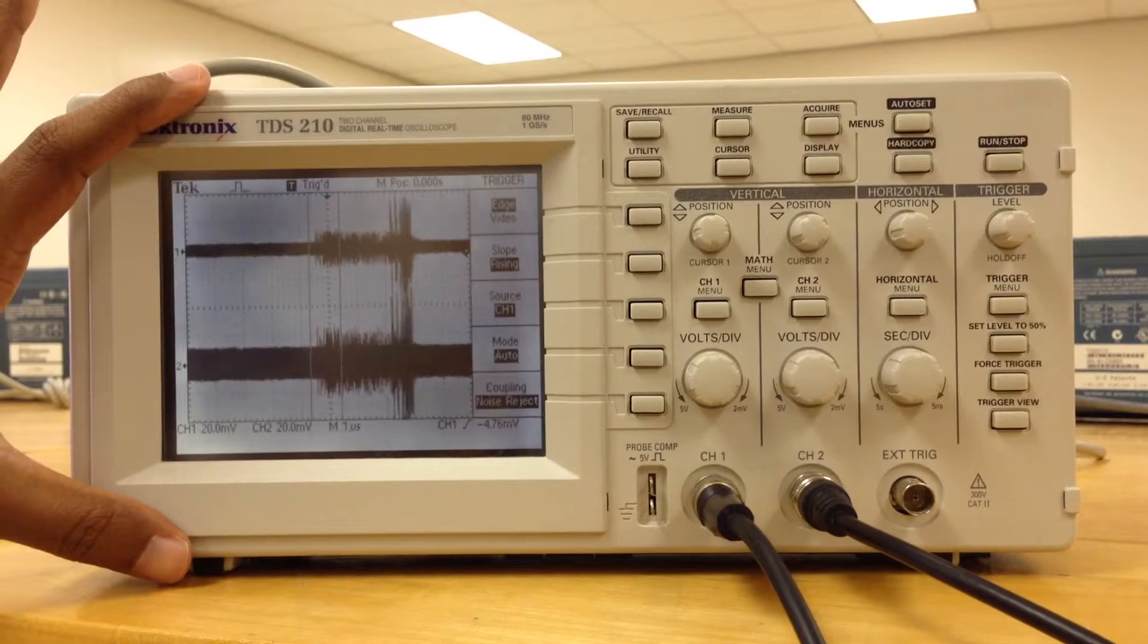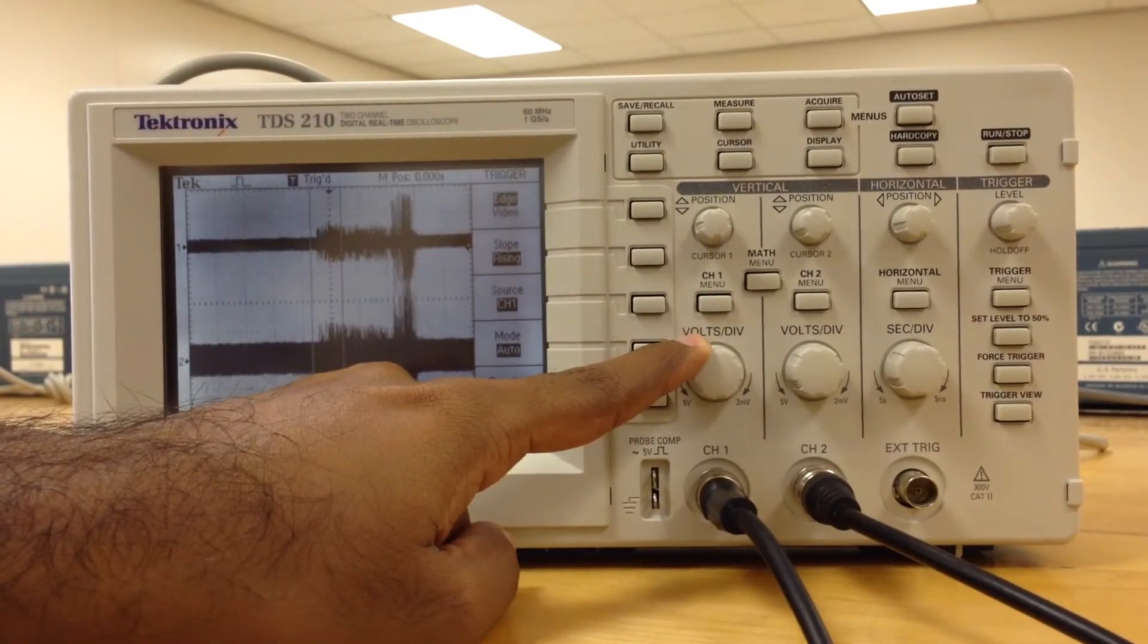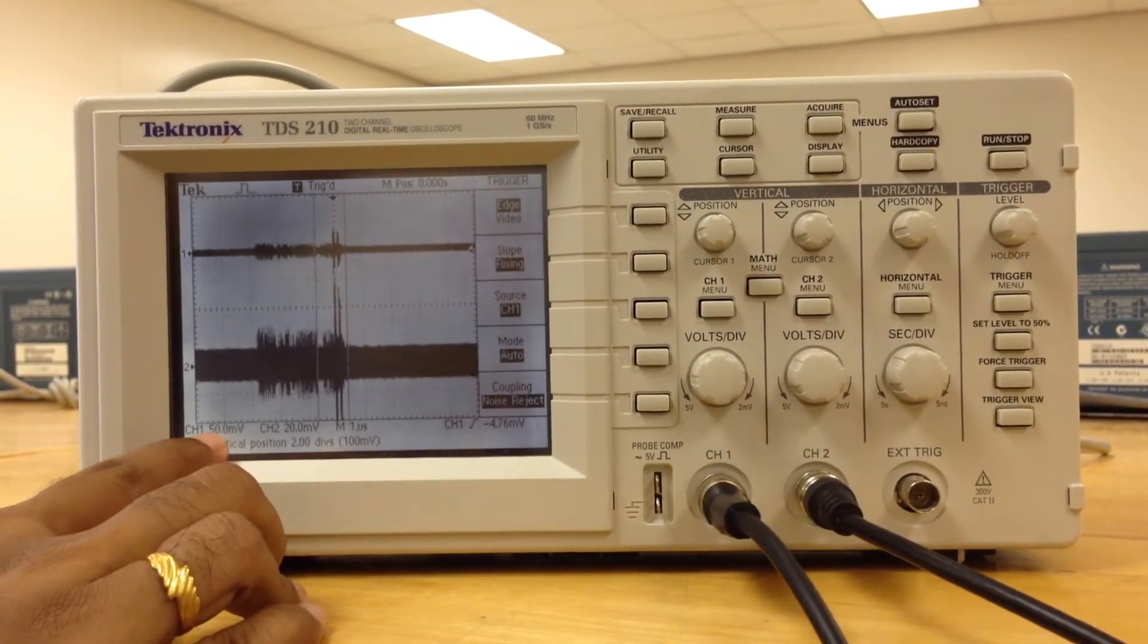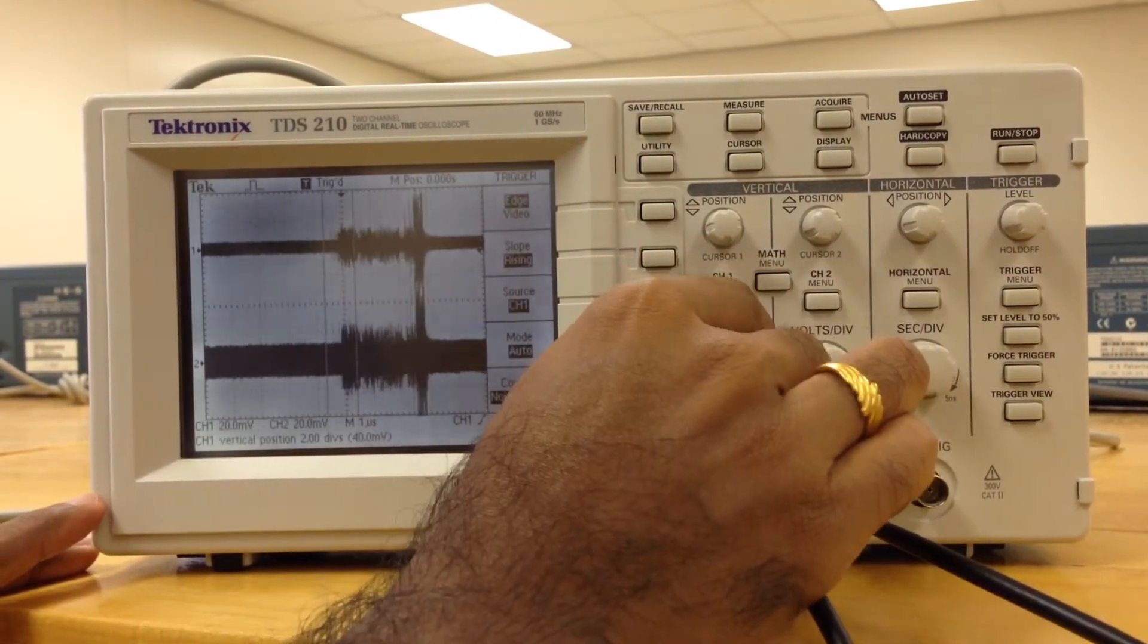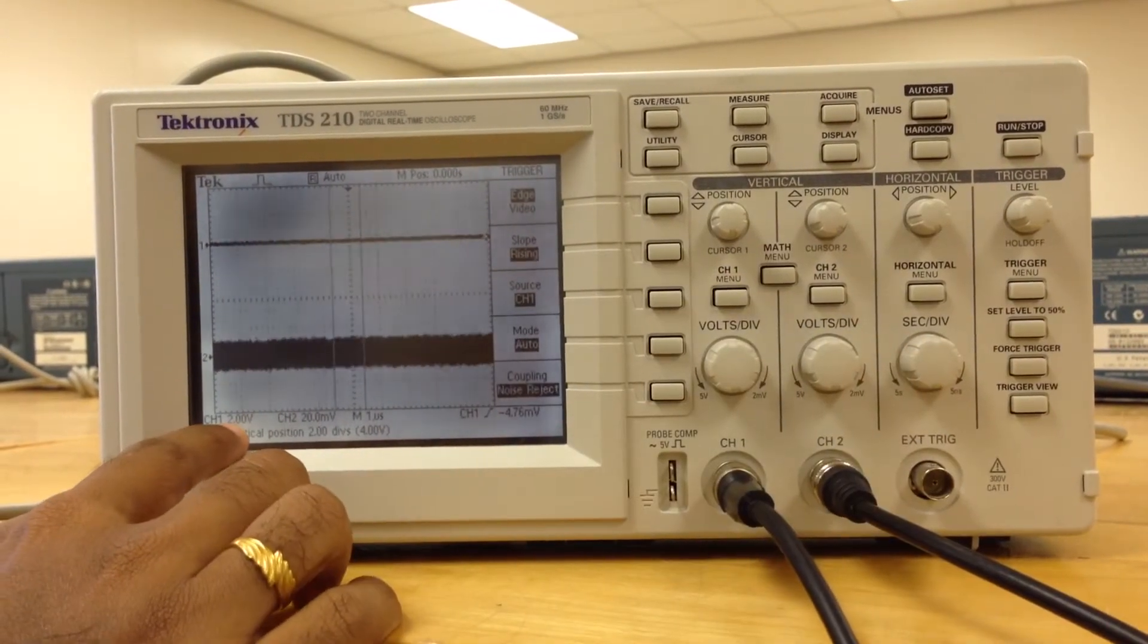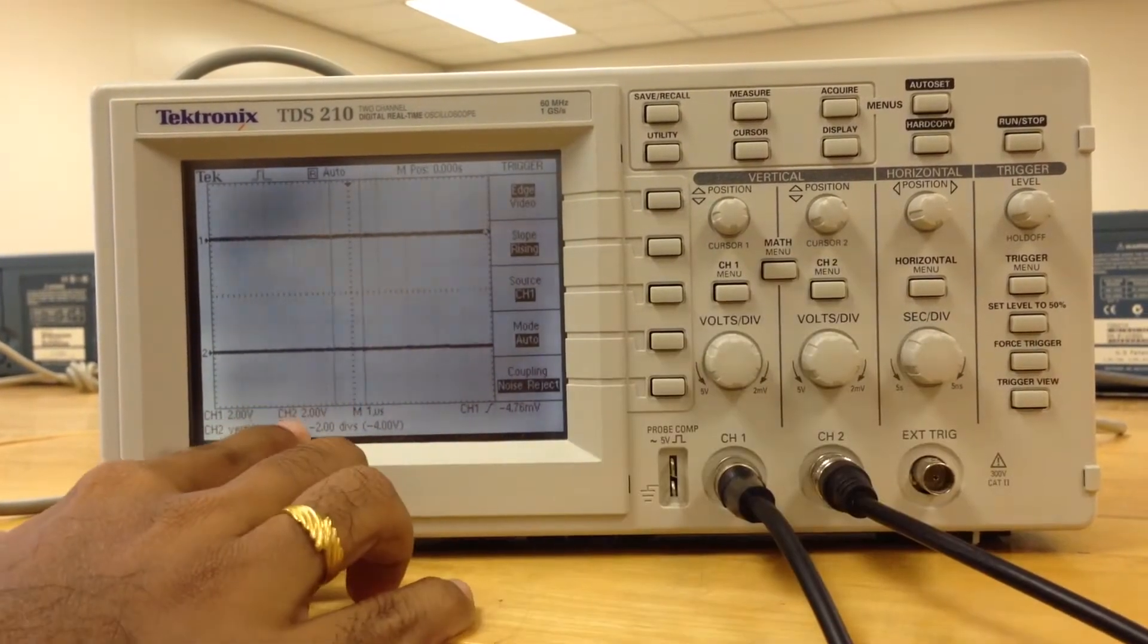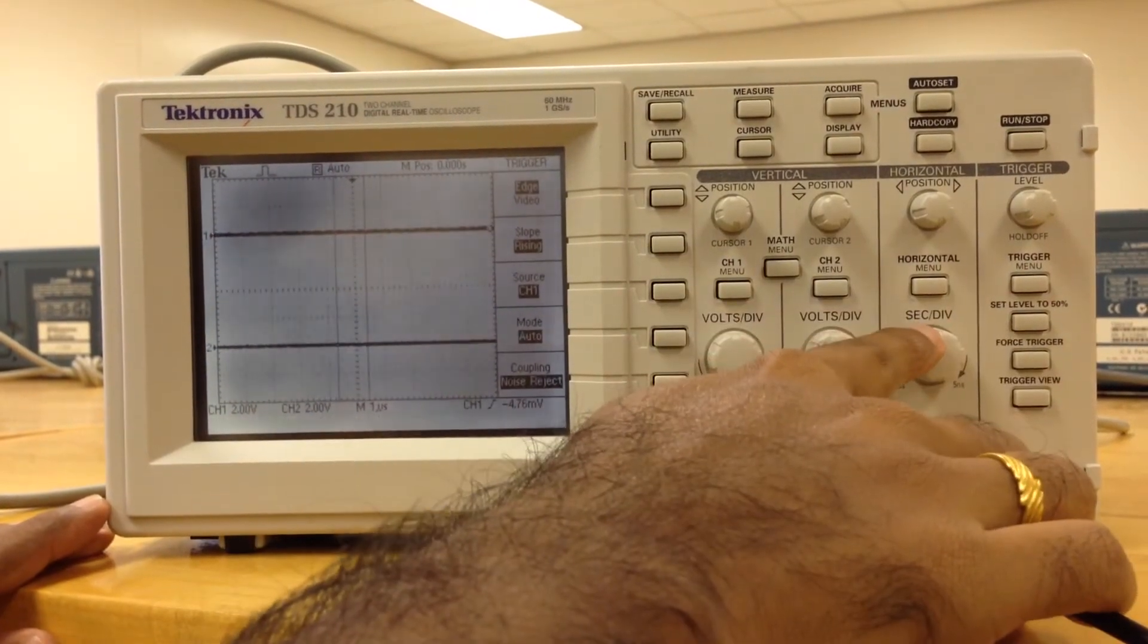Now adjust this vertical section, volts per division. As you adjust, make sure we get 2 volts. I'm adjusting this, now it shows 2 volts. Do the same for channel 2. As you can see, this shows 2 volts. Now adjust this seconds per division.